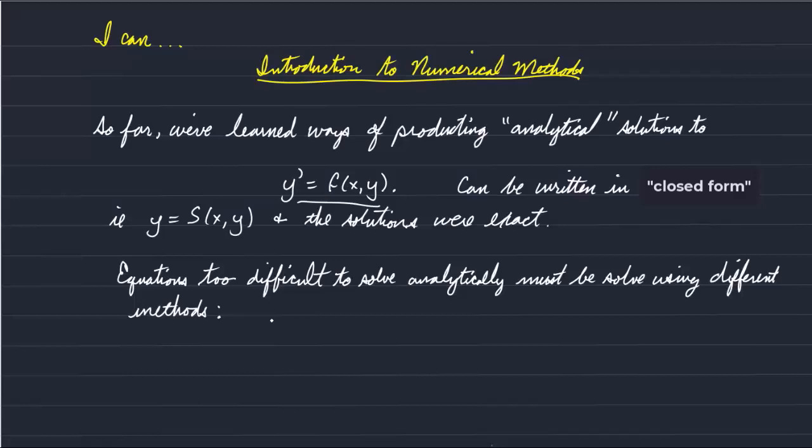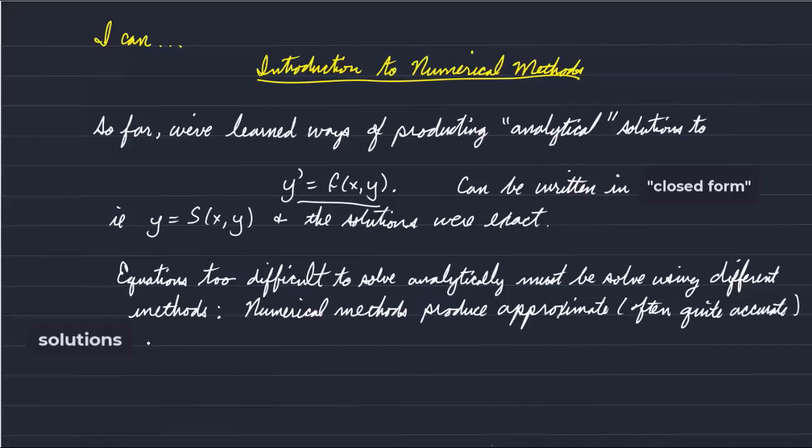In the case of numerical methods, the numerical methods produce approximate solutions at discrete points. And those approximate solutions are often very accurate, but again at discrete points. These are discrete points in space or in time, depending on the problem.